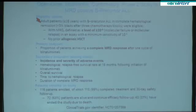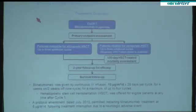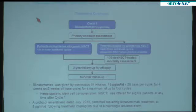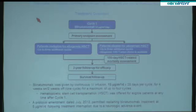116 patients were included in this international trial conducted in several European countries. All patients had to receive at least one cycle — one cycle means 28 days of continuous infusion of Blinatumumab — followed by primary endpoint assessment. After this first cycle, patients could receive three more cycles or a stem cell transplantation at any time point if a donor was available. Afterward, patients entered the long-term efficacy and survival follow-up.